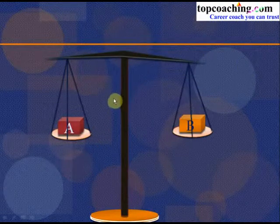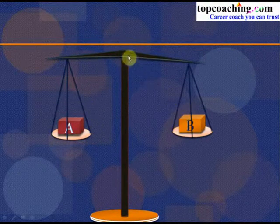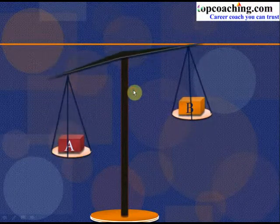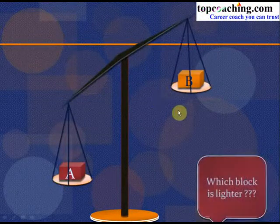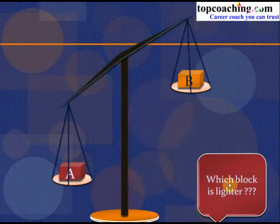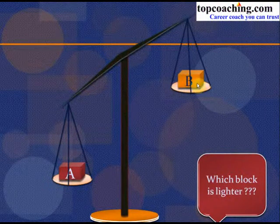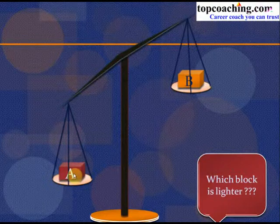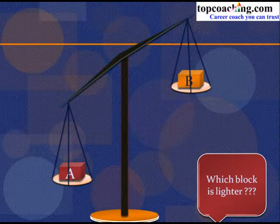Let us say that we have two blocks A and B placed in this balance. Now the balance moves this way. Which block is lighter? Of course your answer should be B, because the weight of A is more than the weight of B, and so B is lighter than A.